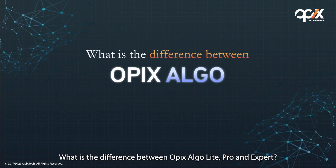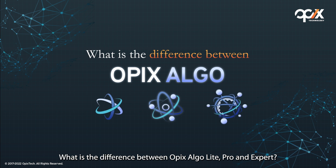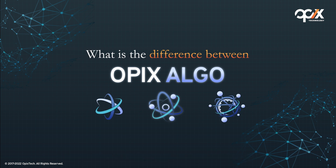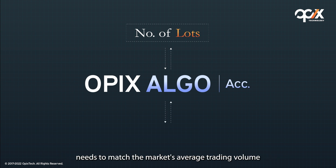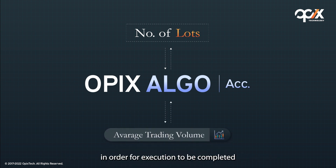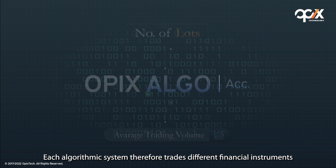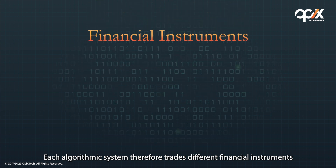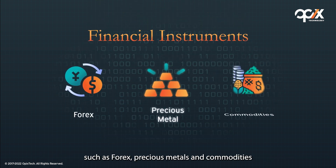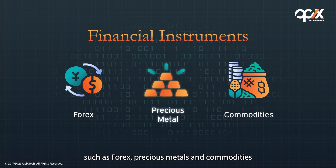What is the difference between OPEX ALGO light, pro and expert? The number of lots executed by OPEX ALGO's managed accounts needs to match the market's average trading volume in order for execution to be completed. Each algorithmic system therefore trades different financial instruments, such as forex, precious metals, and commodities.